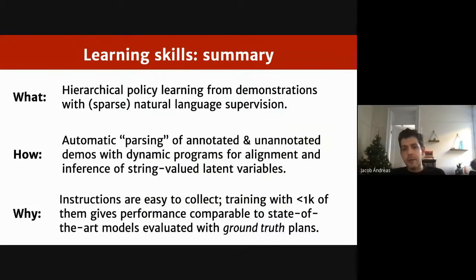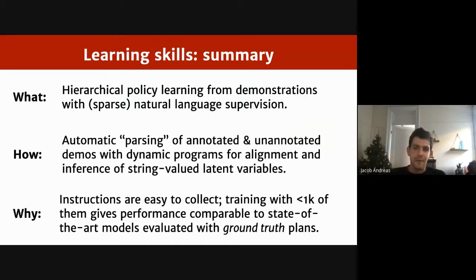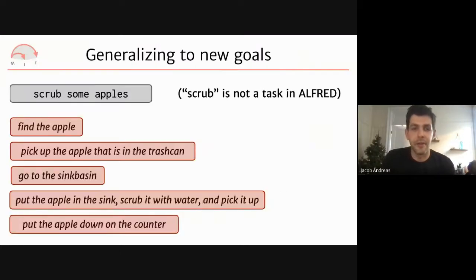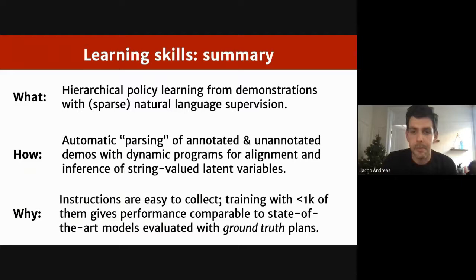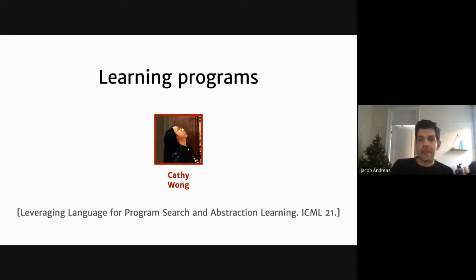Concretely, the low-level policy is a sequence-to-sequence transformer that encodes images into the same embedding space as token embeddings, concatenates them, and generates discrete action descriptions as output. Summary of Part 1: a hierarchical policy reasoning over sequences of high-level skills parameterized by natural language strings, trained efficiently by inferring latent plan descriptions from demonstration datasets. The model is competitive with strongly supervised models and generalizes out of distribution.